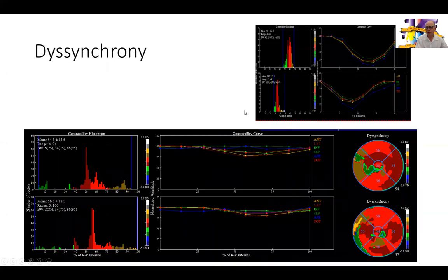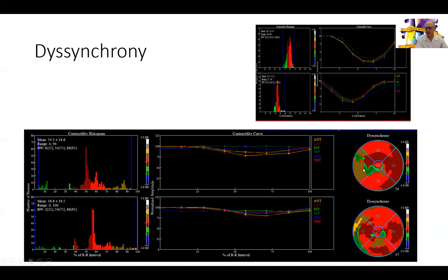Then we move to the dyssynchrony analysis. I kept a normal example on top showing normal synchrony at rest and stress, where all myocardial segments come down together with normal and synchronous contractility. In our patient, all segments are contracting at haphazard times in both rest and stress images with no evidence of significant contractility. The dyssynchrony polar map shows the septum is probably the worst segment for dyssynchrony — not an unexpected finding in patients with left bundle branch block.